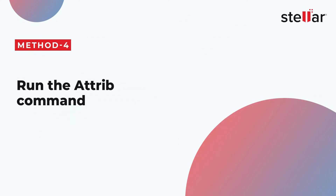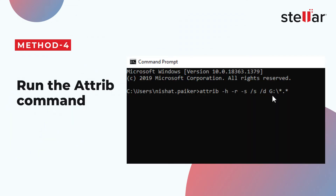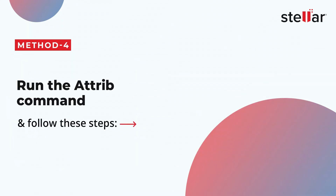Method 4: Run the Attrib command. Sometimes, corruption or virus-infected camera SD cards can hide the photos saved on it. In this scenario, you can try running the Attrib command in CMD to view your photos. Follow these steps to recover the hidden photos.